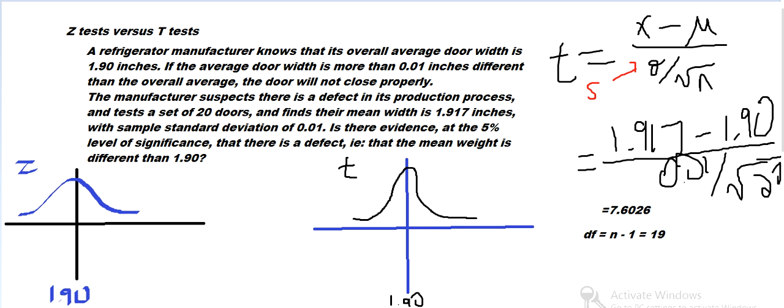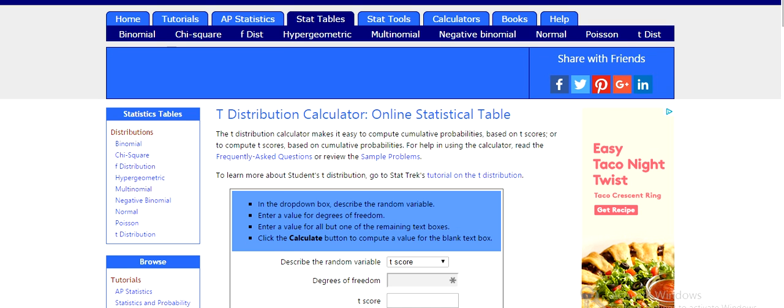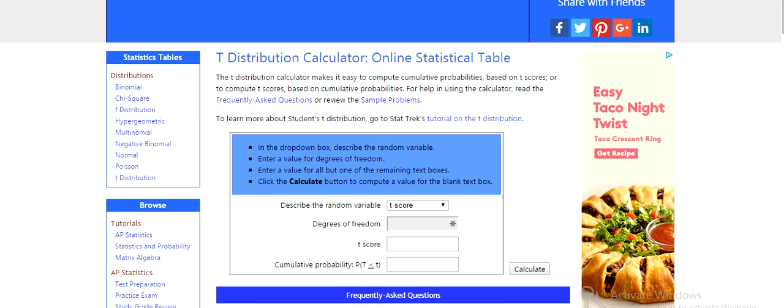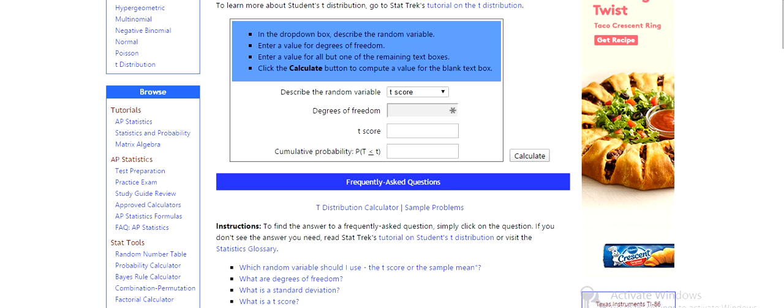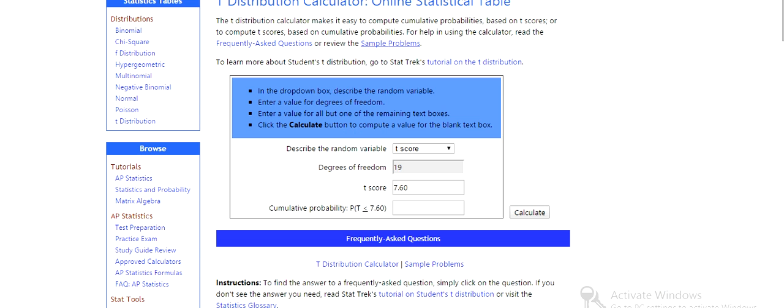And then we can use the StatTrek t-distribution calculator. If you google StatTrek.com, S-T-A-T-T-R-E-K. And we want to punch in the degrees of freedom and the t-score. So that was 19 and 7.60. And we can calculate the cumulative probabilities, 1.000 it's telling us.